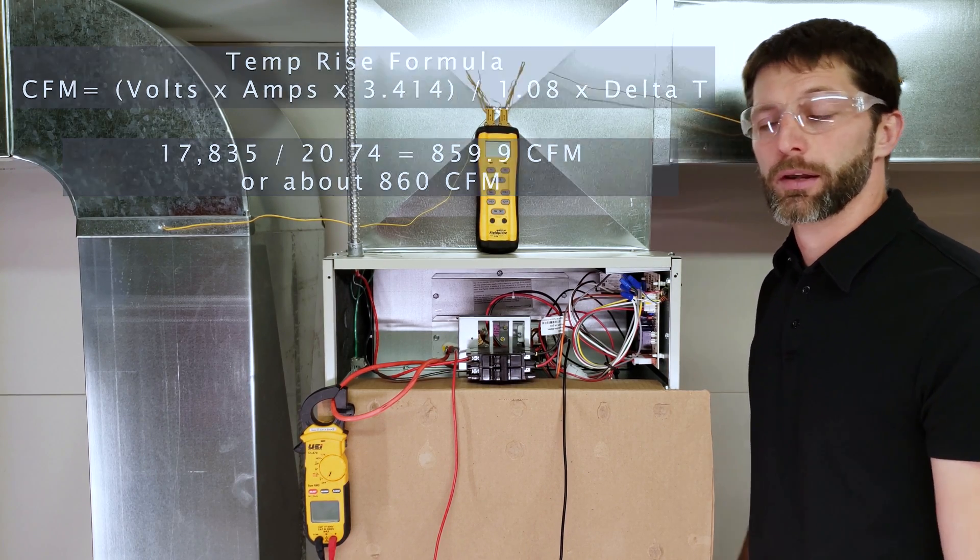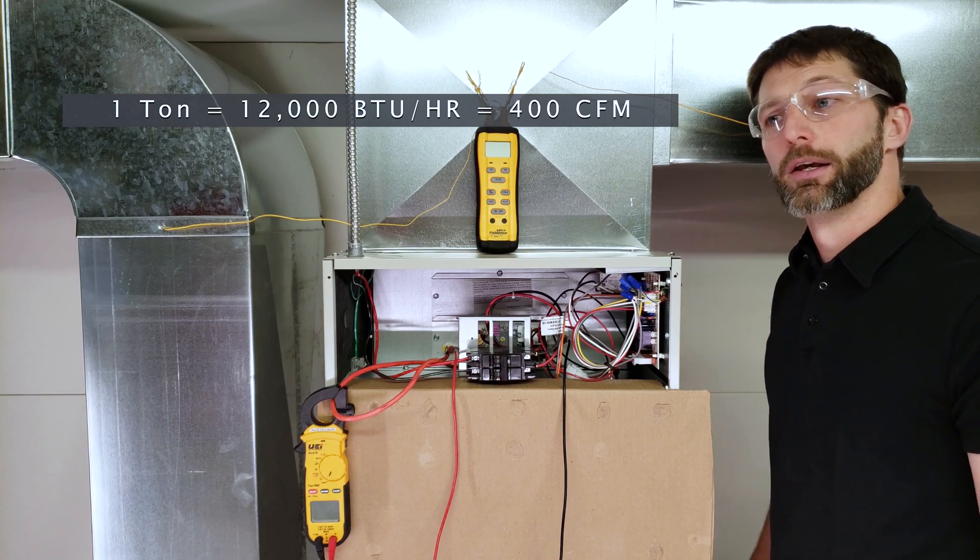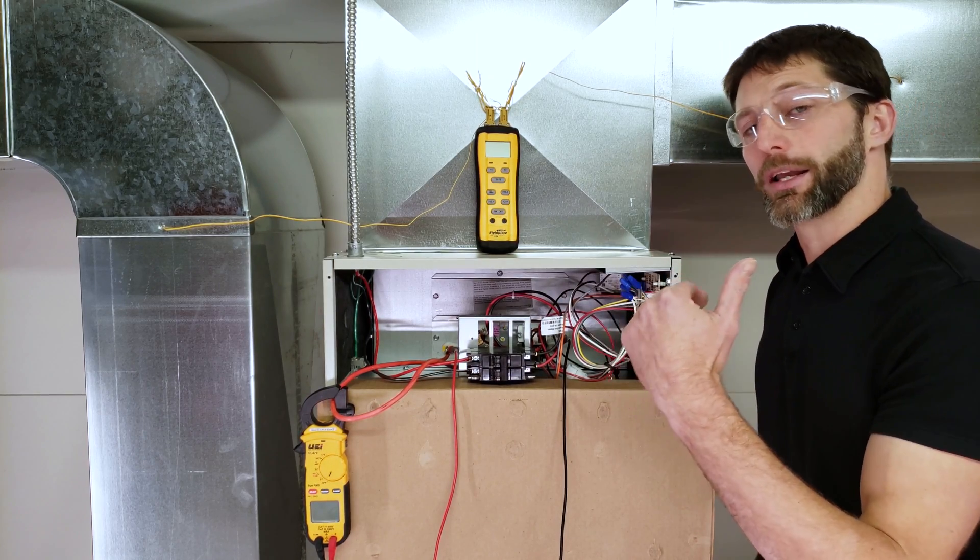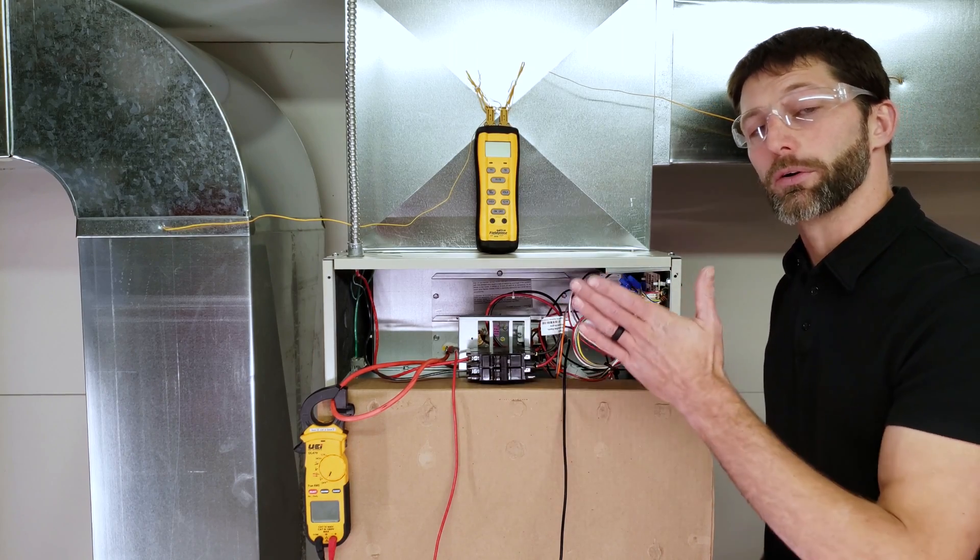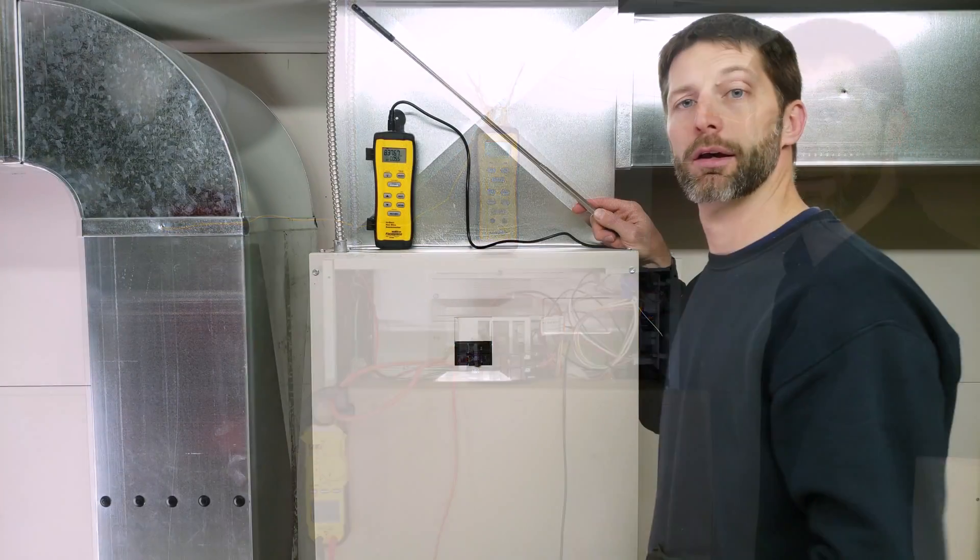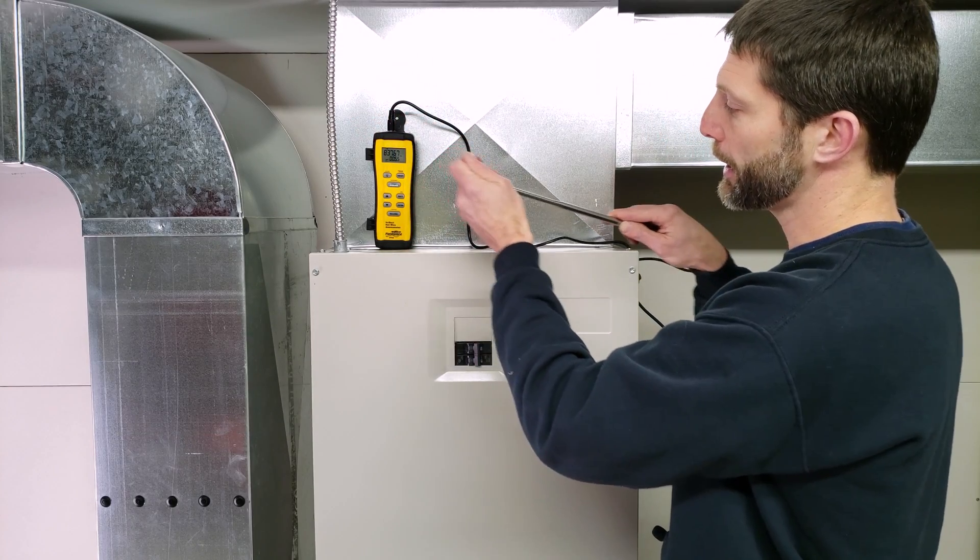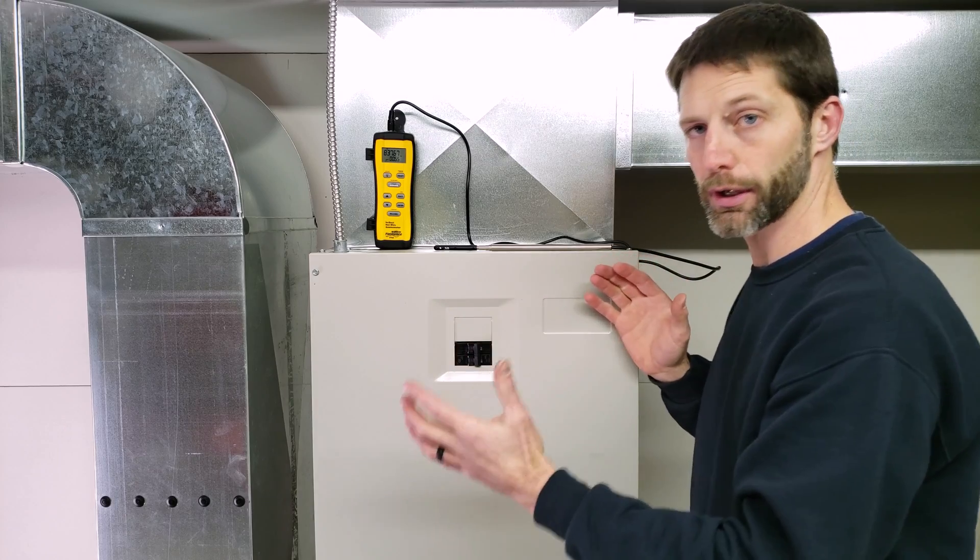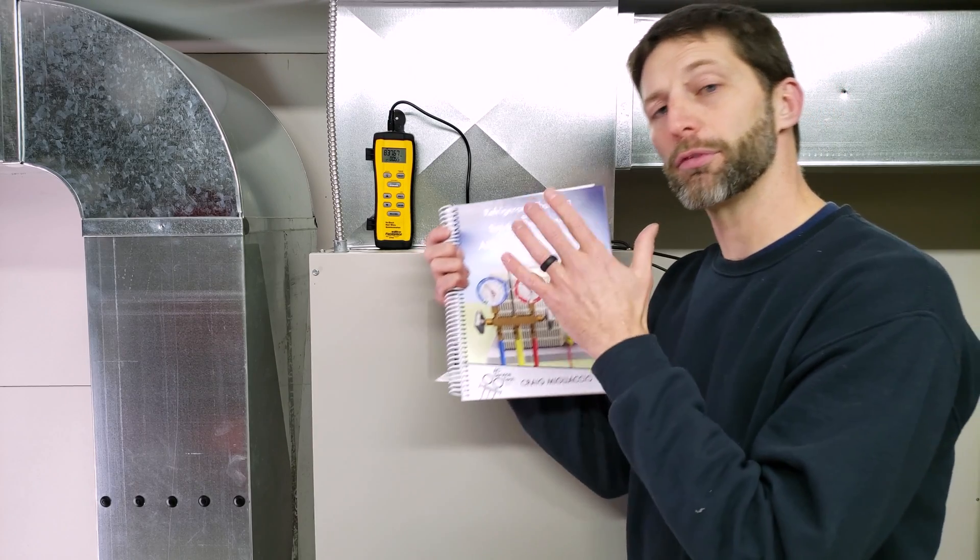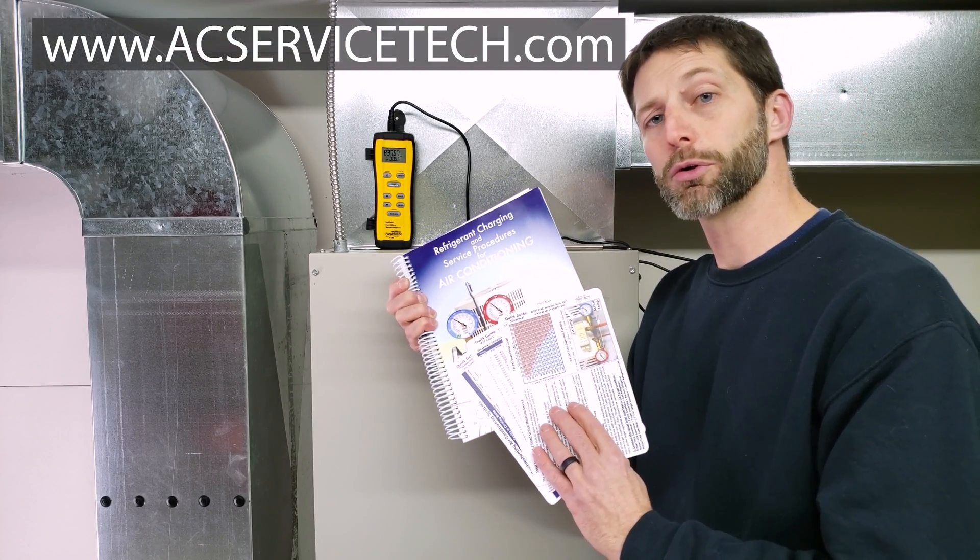For every ton of capacity, you want about 400 CFMs of airflow for a cooling system—say 350 to 425 CFMs. You could be on the lower side at 350 if removing a lot of humidity. We're at 430 CFMs per ton (860 CFMs divided by 2 tons). The CFM from the temp rise formula was very close to the in-duct anemometer reading, just slightly higher. This system has the correct airflow for checking refrigerant charge and troubleshooting. To learn more, check out our book on refrigerant charging service procedures, available at acservicetech.com and Amazon. See you next time at AC Service Tech channel.